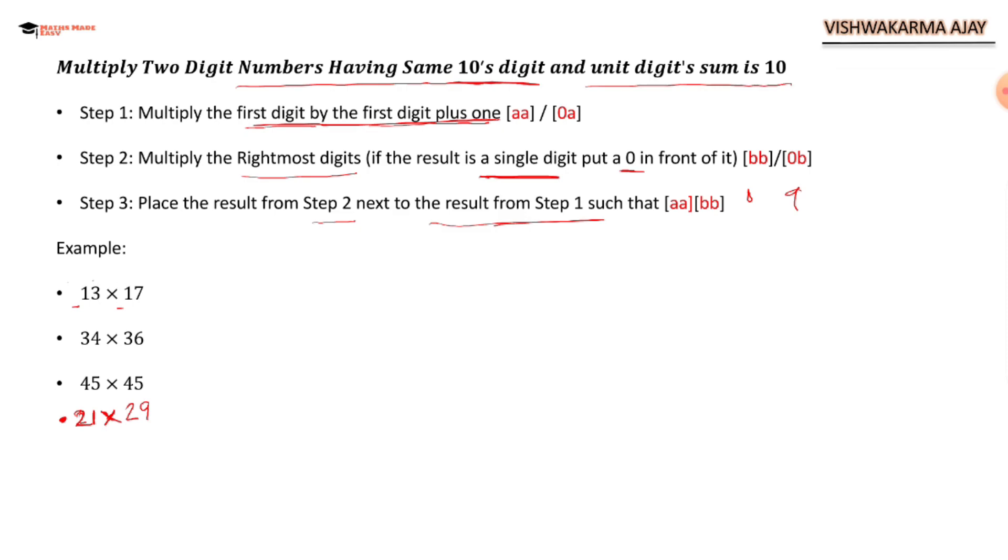Let's see according to our steps what we have to do. We have to multiply 1 with 1 plus 1, that is 2. 3 times 7 is 21. That's it.